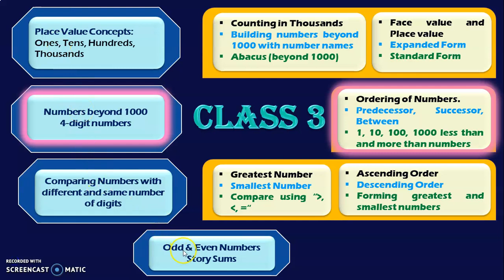These are all the learning outcomes in class 3 with respect to the concept of numbers. I have explained about each of these learning outcomes in detail in my class 3 learning outcome video. The link is given below in the description box or you can also find it in the card section. Today in this video we are going to see the learning outcome: number activities for numbers beyond 1000 or 4-digit numbers.